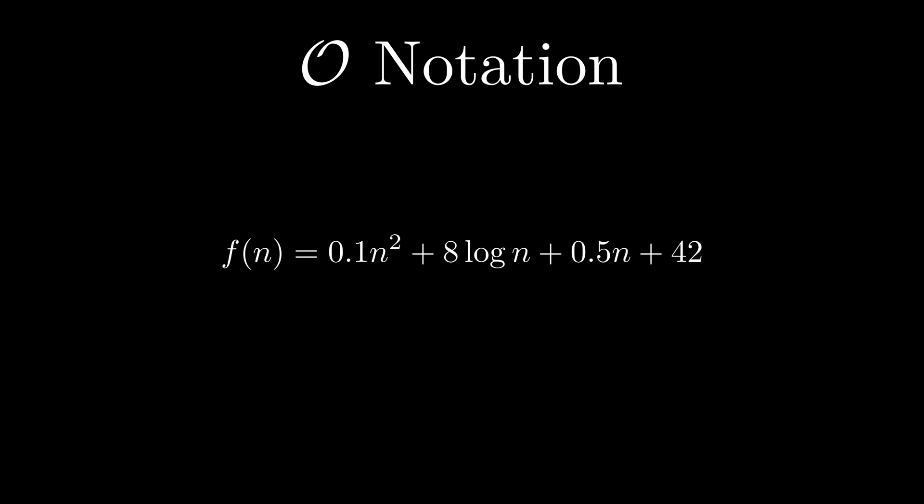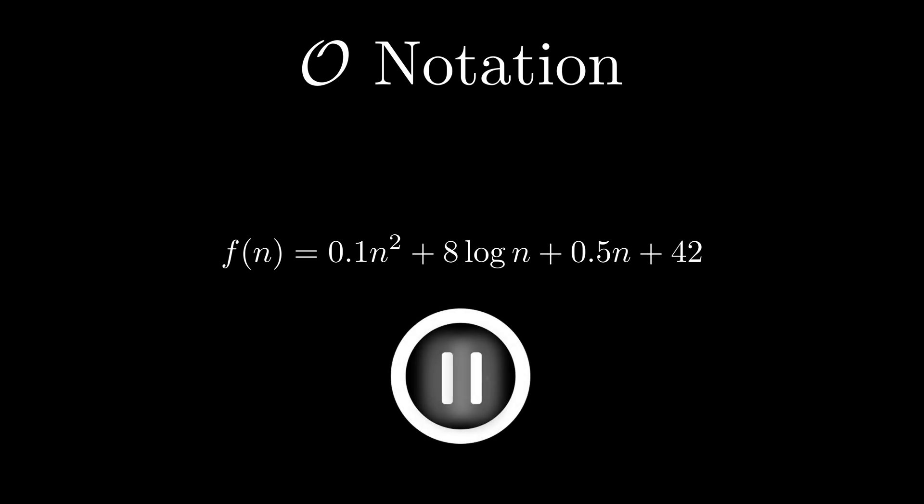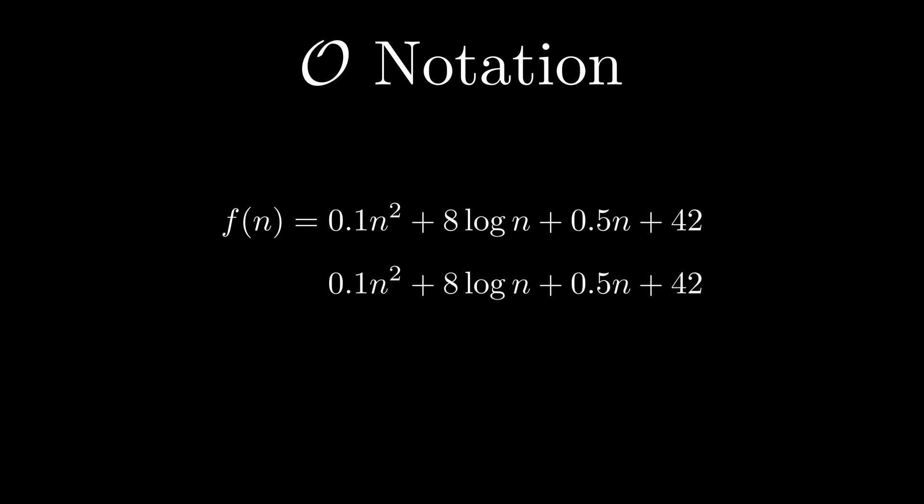Can you figure out the O-notation of the following function f? Let's try to simplify the terms of f. In the O-notation, multiplicative constants do not matter for the asymptotic behavior, so we can get rid of them.